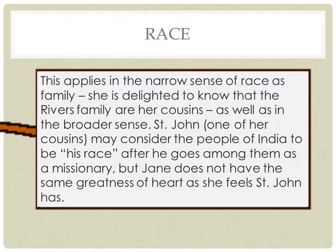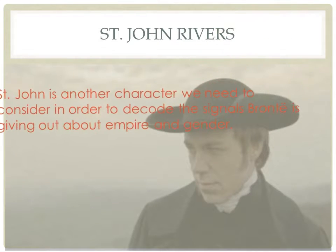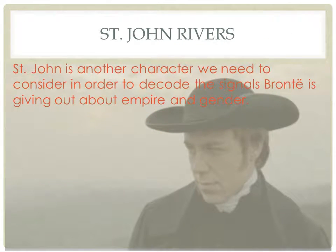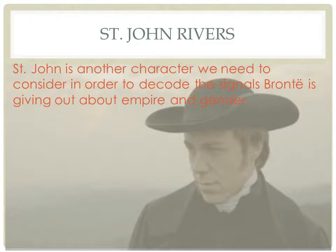I want to look at the ideas of race in the Victorian period and in Brontë by turning to St John — spelled Saint John but pronounced 'Sinjin.' He's key to completing the picture. We now have three men — Rochester, John Eyre, and St John — all connected with empire, colonialism, and gender, all part of this narrative.